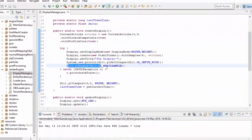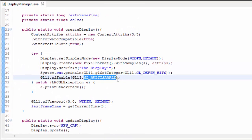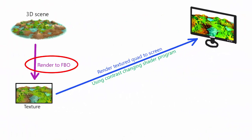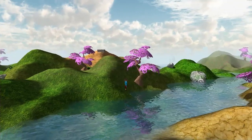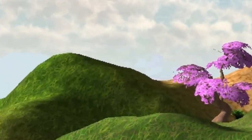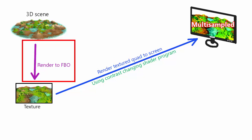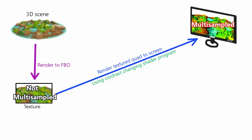A few videos ago we implemented anti-aliasing using multi-sampling with a method specific to Lightweight Java Game Library. However, now that we're using a post-processing pipeline and our scene is being rendered to FBOs and not straight to the screen, you might have noticed we once again have the problem of pixelated edges. This is because the previous code only works for the default framebuffer. The only thing being rendered to that framebuffer now is a single textured quad, and the main scene rendering goes to a separate FBO that isn't multisampled.